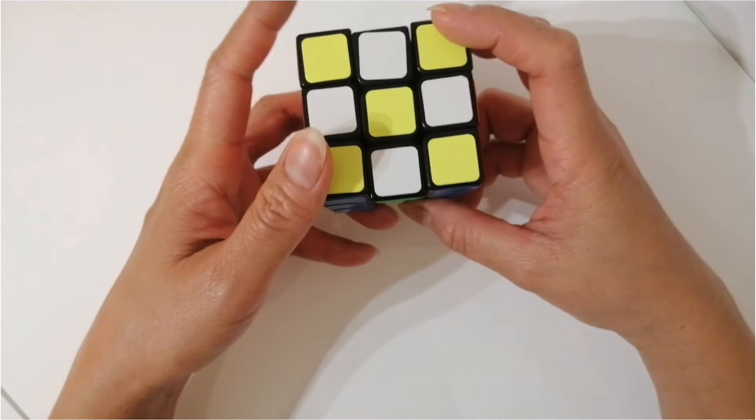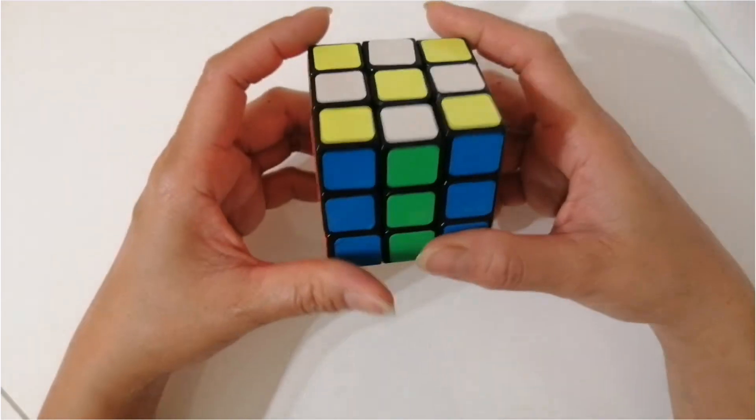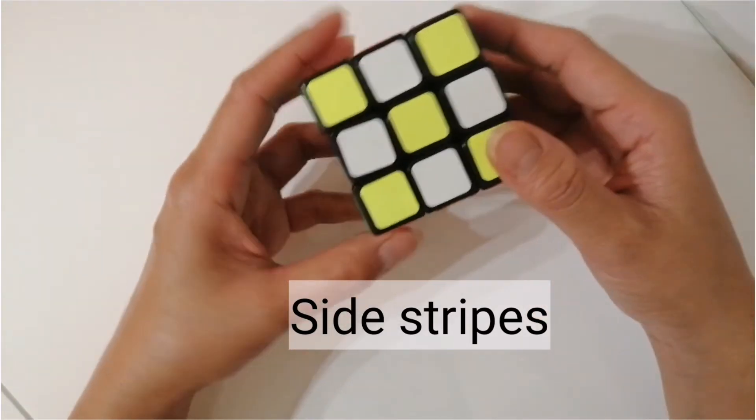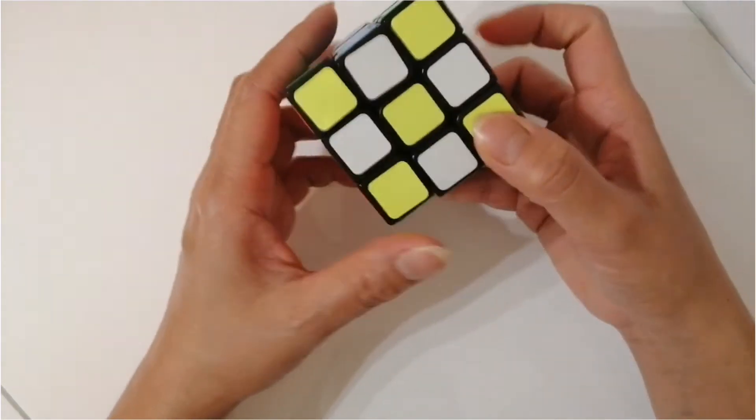So here we go. This is the pattern of side stripe on top, a checkerboard pattern. So how to undo the side stripe?